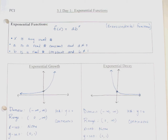The variable x can be any real number. a is a real number constant, but a cannot equal 0 — if a equals 0, we have a horizontal line y equals 0, which is not exponential. b is also a real number constant and b cannot equal 1. If b equals 1, then 1 to any power is 1, and we are back to a linear function. So x is the power, a is a nonzero constant, and b is the base of the exponent and cannot be 1.